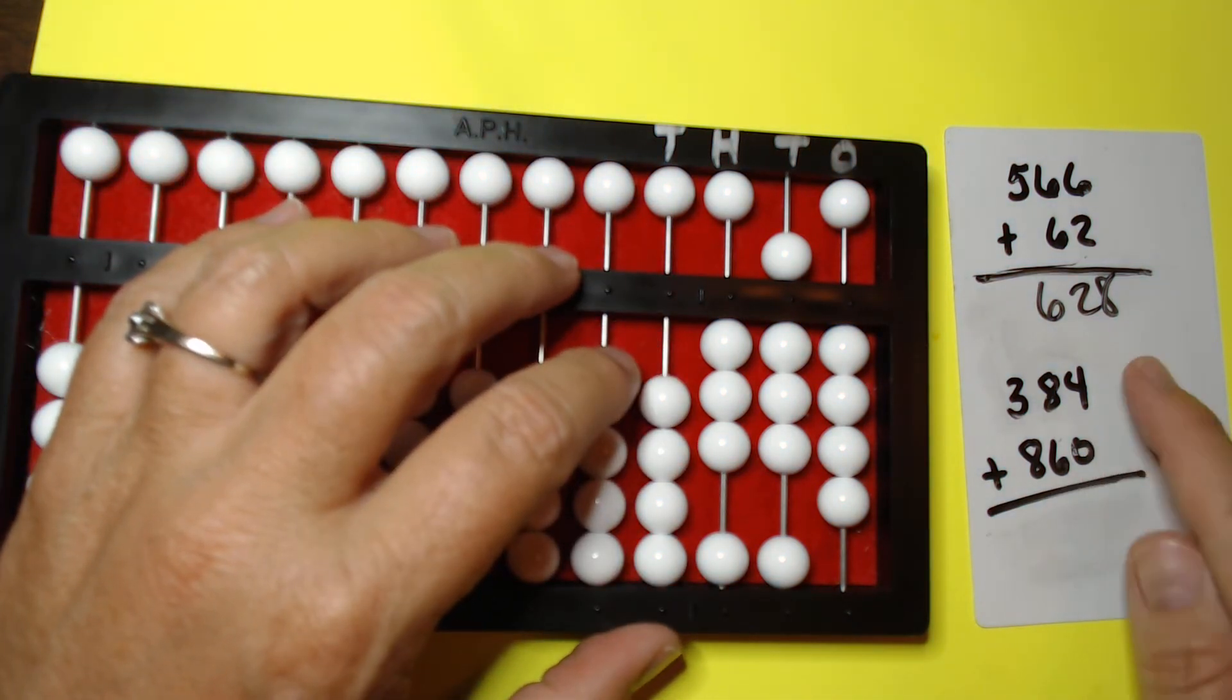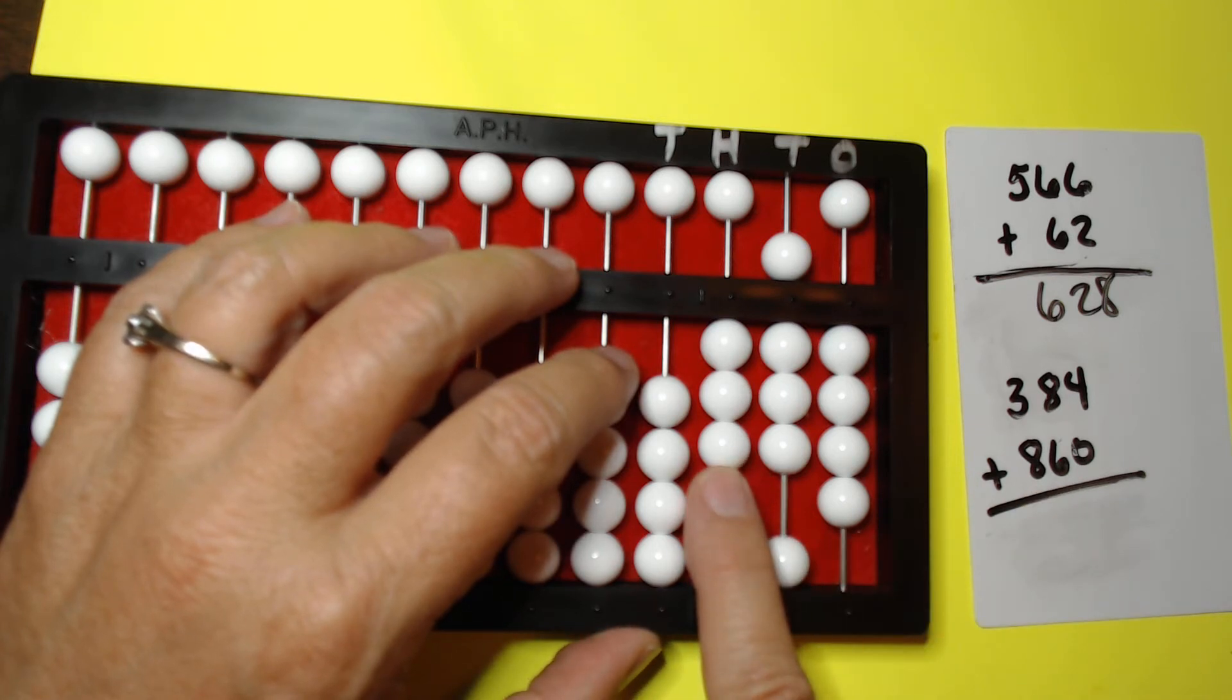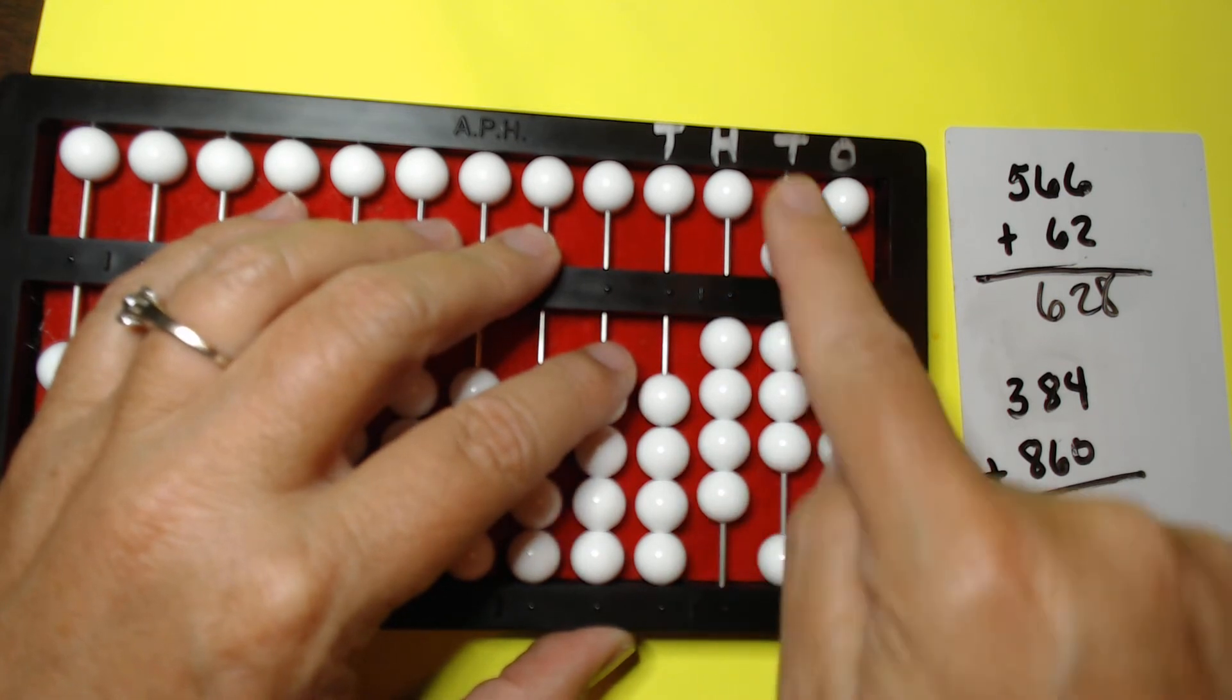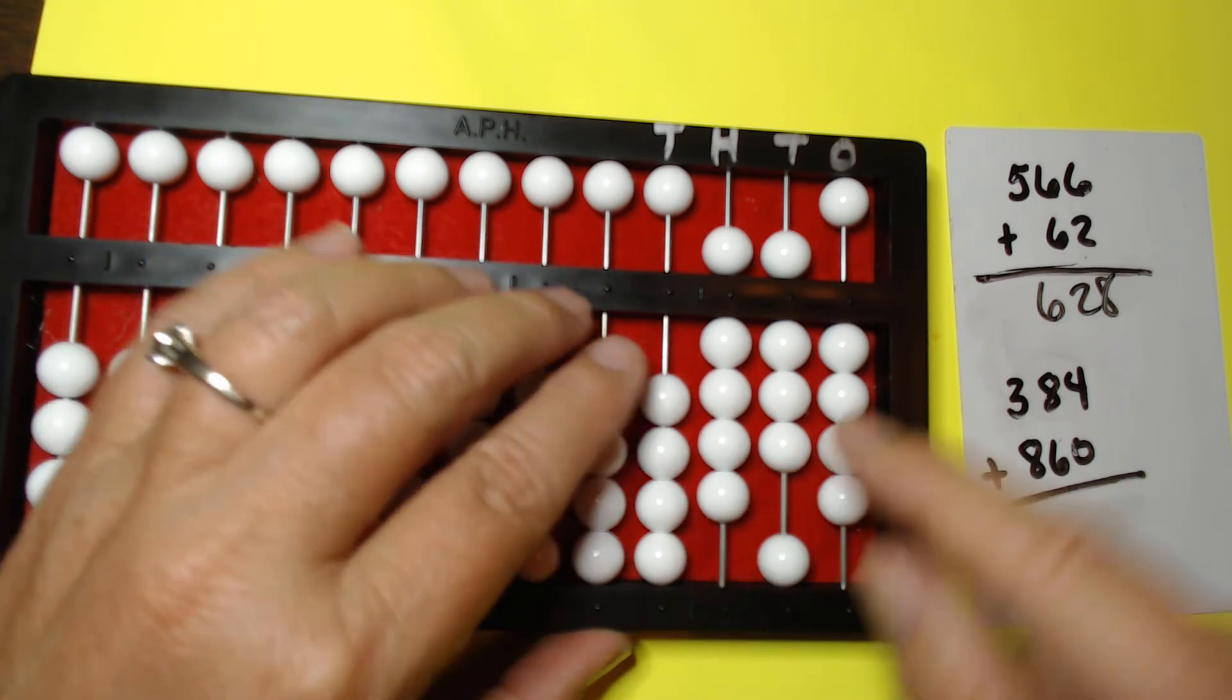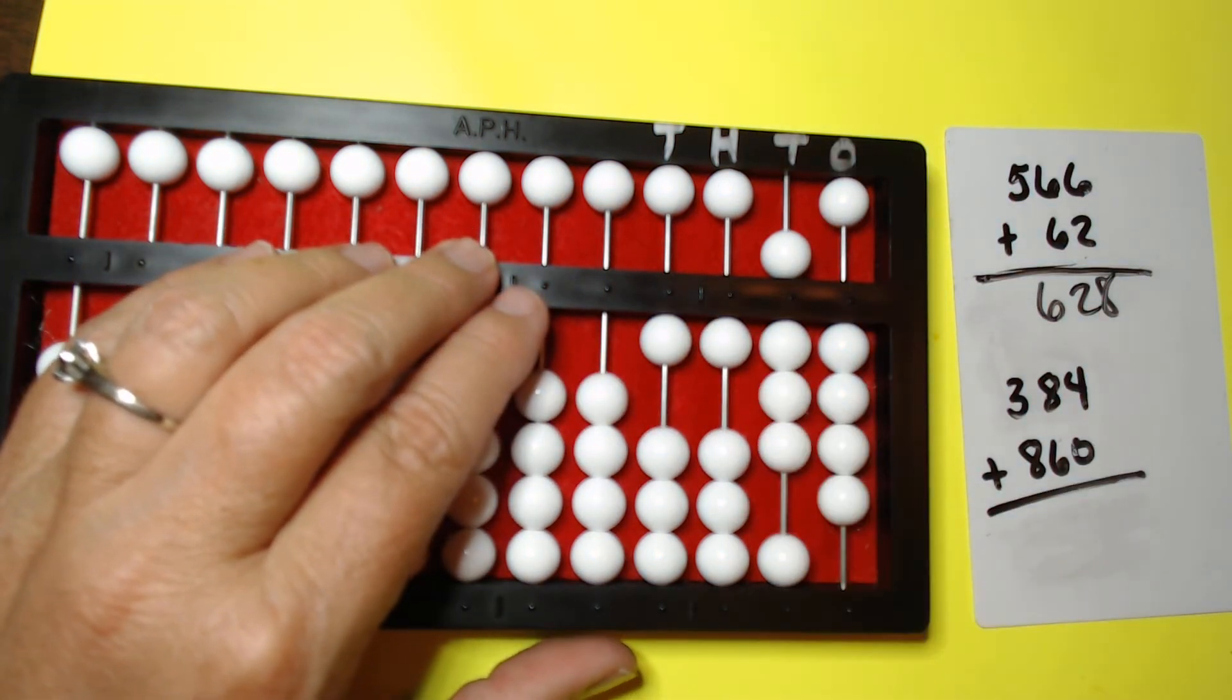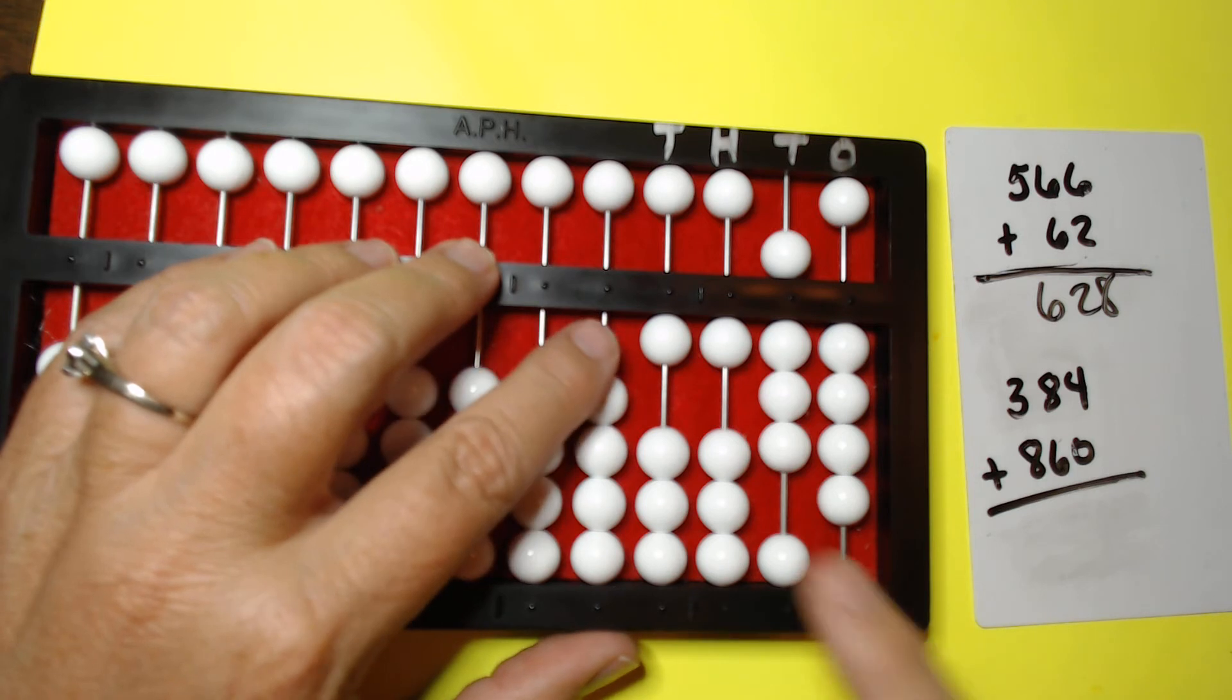We got the first number set. We're going to add 800 to the hundreds column. So let's start counting. 1, 2, 3, 4, 5, 6, 7, 8. All right. So we made a couple exchanges there. Go back and look at it if you need to.